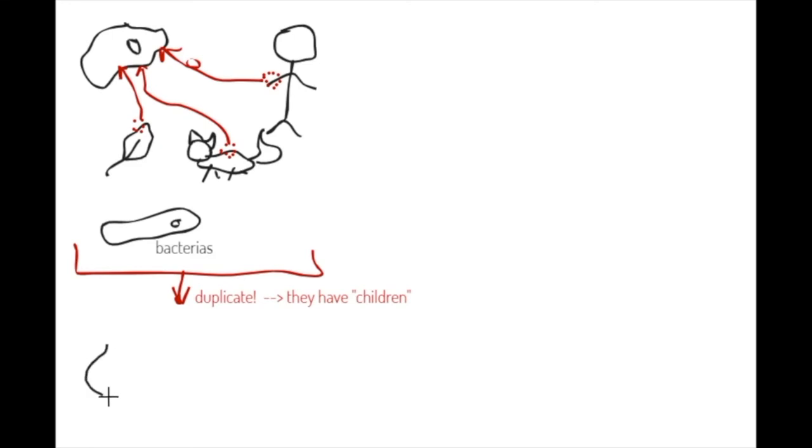If we start with only one cell, like this one, it can make a copy of its genetic material, that here is a really small circle. And now we have two times the genetic material. Then the cell can split into two pieces. And then at the end we have two times the same cell. We can say then that the first one was the father. And at the end we have two children.